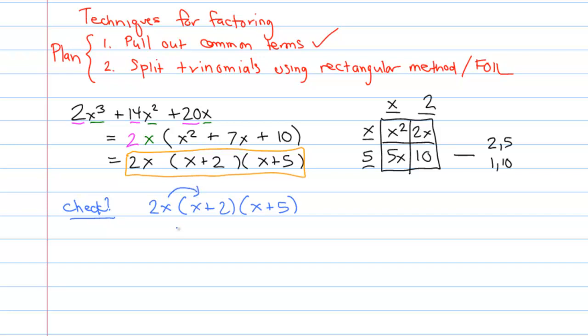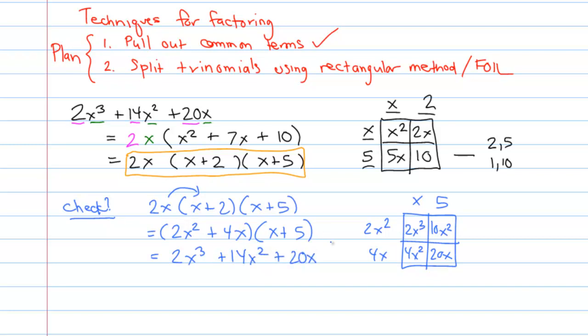I'll first distribute the 2x in. So I'm going to have 2x squared plus 2 times 2x, which is 4x, times x plus 5. And now if I multiply these out using the rectangular method, I have an x plus 5 as my second term, a 2x squared and a 4x. That's going to get me 2x cubed. 2x squared times 5 is 10x squared. 4x times x is 4x squared. And 4x times 5 is 20x. And so if I add those entries up, we're going to have a 2x cubed. 10x squared plus 4x squared is 14x squared and a 20x, which matches the original value.